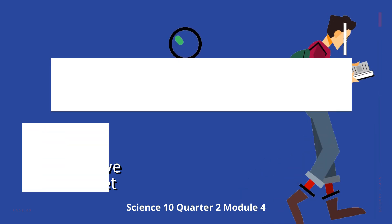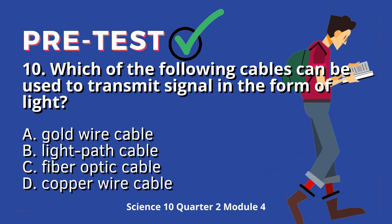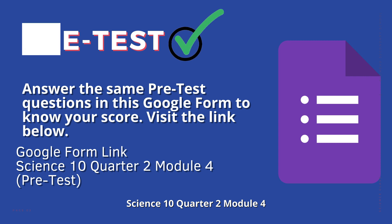Question 10: Which of the following cables can be used to transmit signals in the form of light? A. Gold wire cable. B. Light path cable. C. Fiber optic cable. D. Copper wire cable. Answer the same pre-test questions in this Google form to know your score. Visit the link found on the description part of this video module.